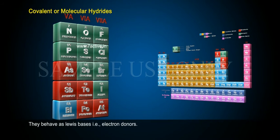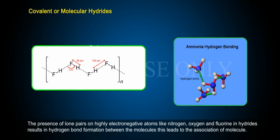They behave as Lewis bases, that is, electron donors. The presence of lone pairs on highly electronegative atoms like nitrogen, oxygen, and fluorine in hydrides results in hydrogen bond formation between the molecules.